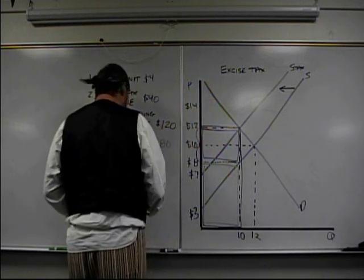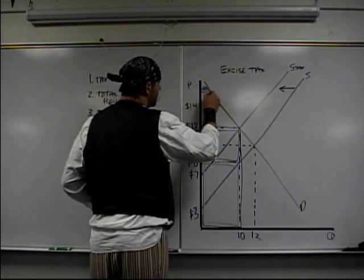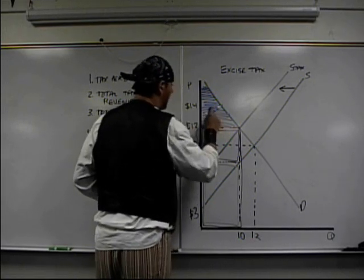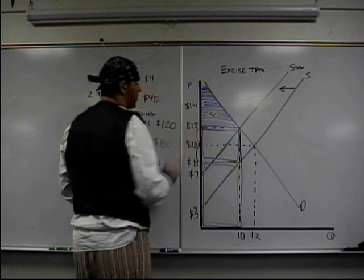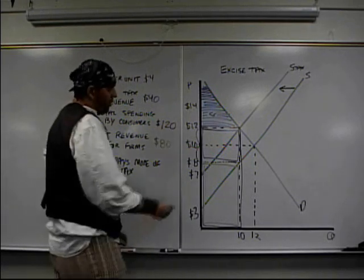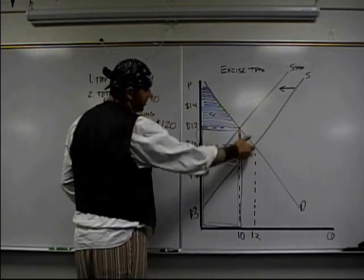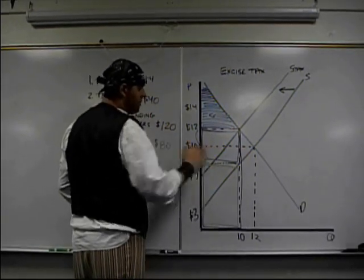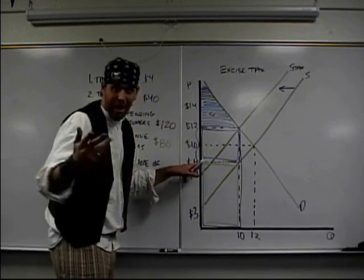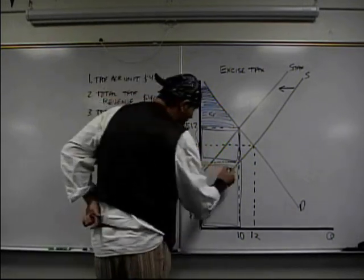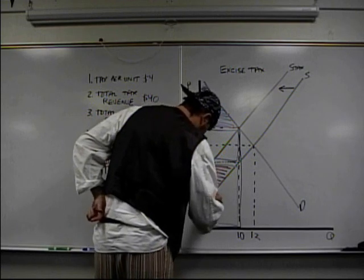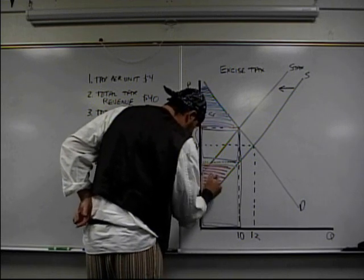So consumers surplus is sitting right there. Producers surplus, well, they used to, we wanted to sell it for this supply curve, and they sold it for ten dollars. But not anymore, they only get eight dollars. Remember, they had to pay that tax. So the producer surplus is down here. Producer surplus is right there.